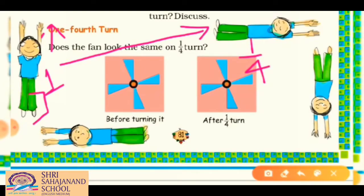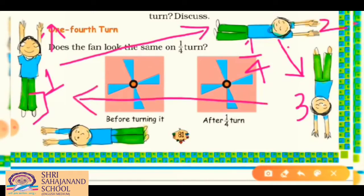Now, what will happen if this sleeping position goes to another one fourth turn? You will get picture three — just upside down of the first picture. The hands are downside and legs are upside. This is a half turn. Two one-fourths make a half, as you studied in Class 4.